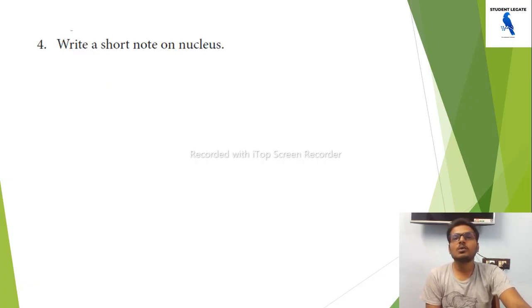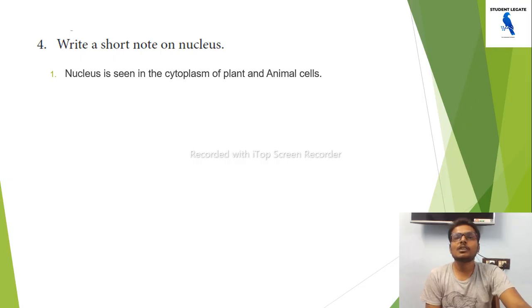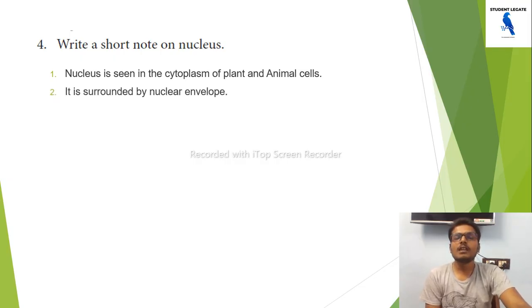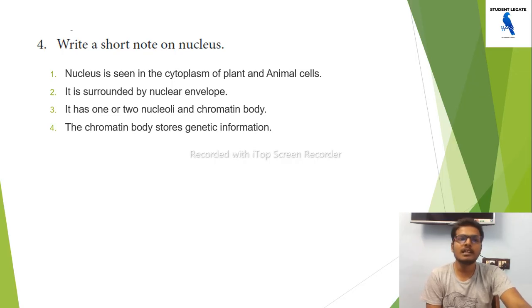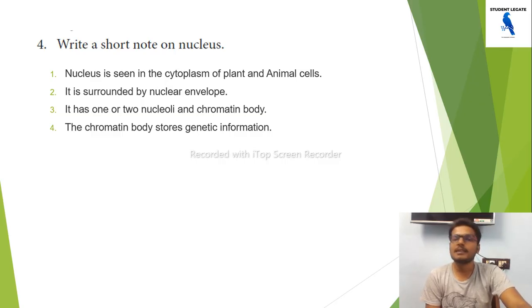Write short notes on the nucleus. The nucleus is seen in the cytoplasm of plant and animal cells. It is surrounded by the nuclear envelope. It has one or more nucleoli and chromatin body. The chromatin body contains genetic information.